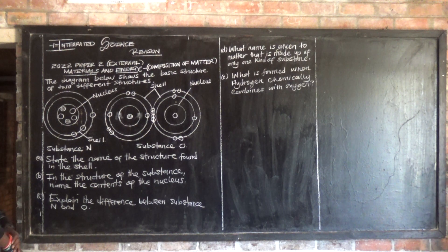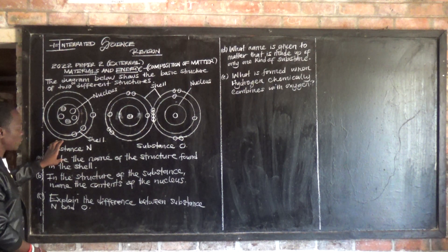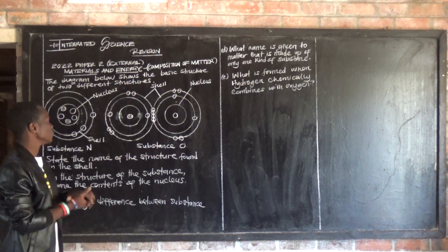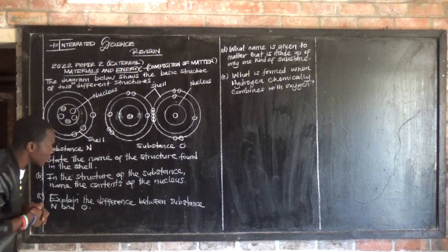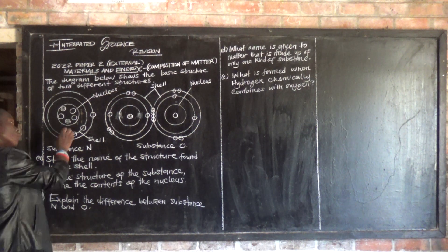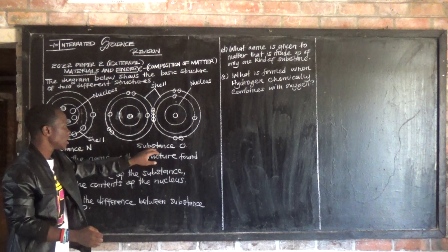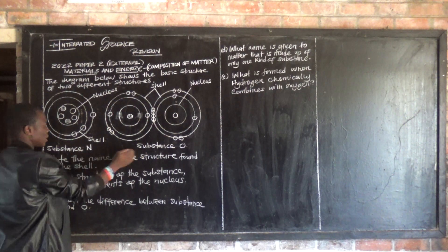The diagram below shows the basic structure of two different structures. I have got substance N and substance O. The question states: name the structure found in the shell. So in each of these substances, N and O, we have a shell. Let us first identify the two substances — what is N?